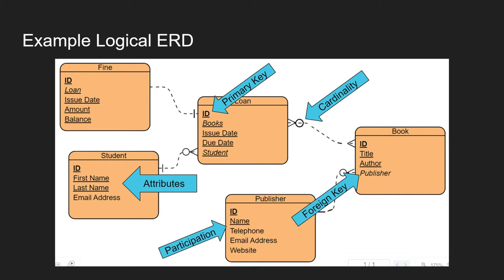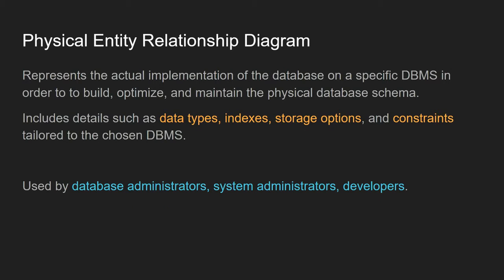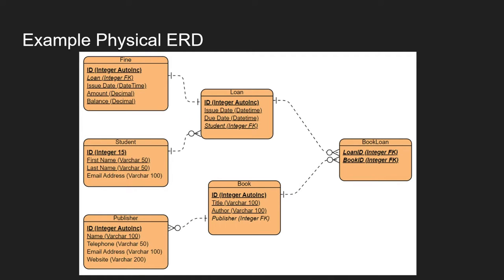That leads us to the final type: the physical entity relationship diagram. This tries to represent the actual implementation of the database, usually down to a specific type of database management system, so that you're ready to start building, optimizing, and maintaining the database itself. This includes data types, indexing, storage options, and constraints within individual tables, and it's used by database administrators, system administrators, and developers when finally implementing the system.